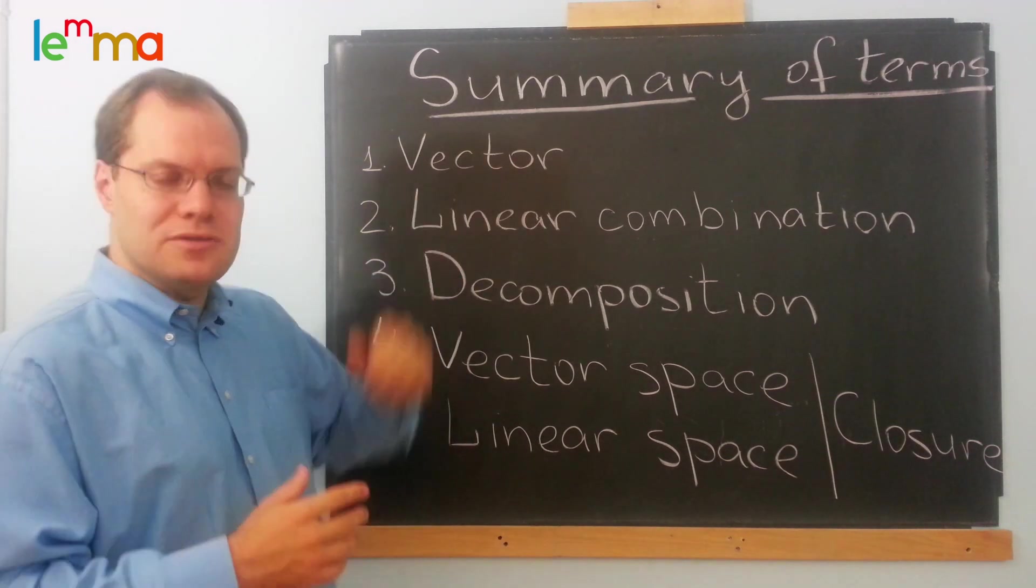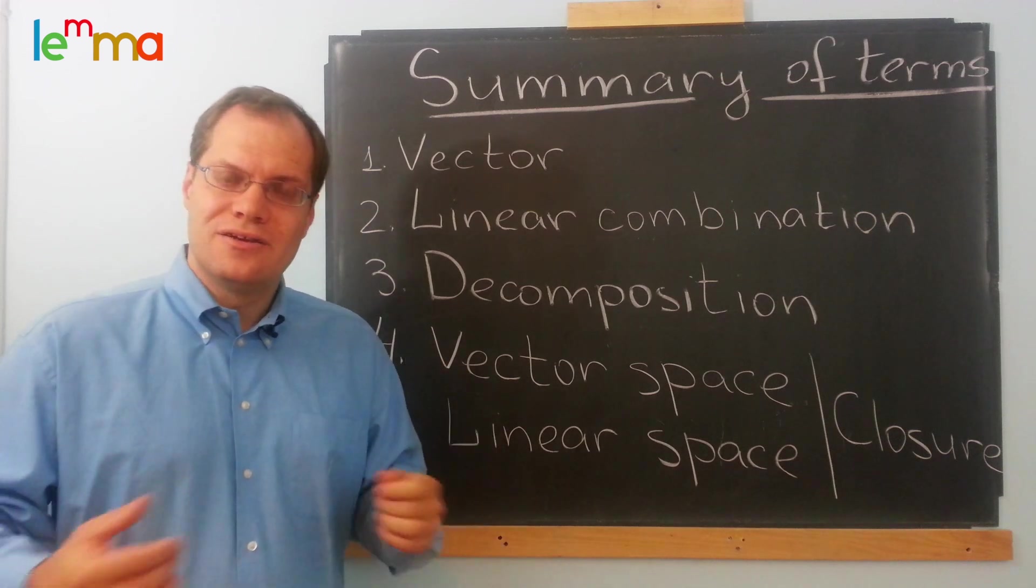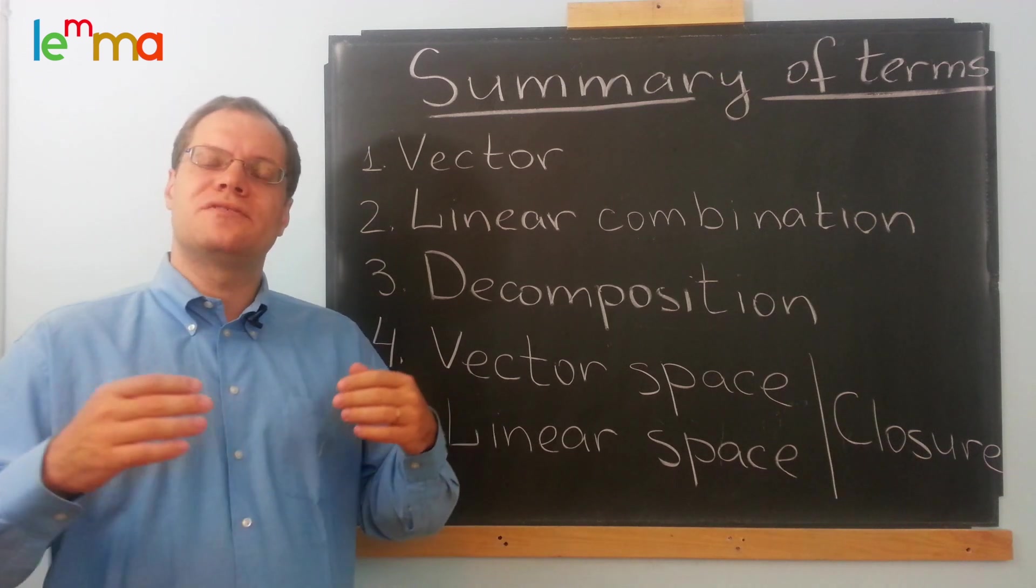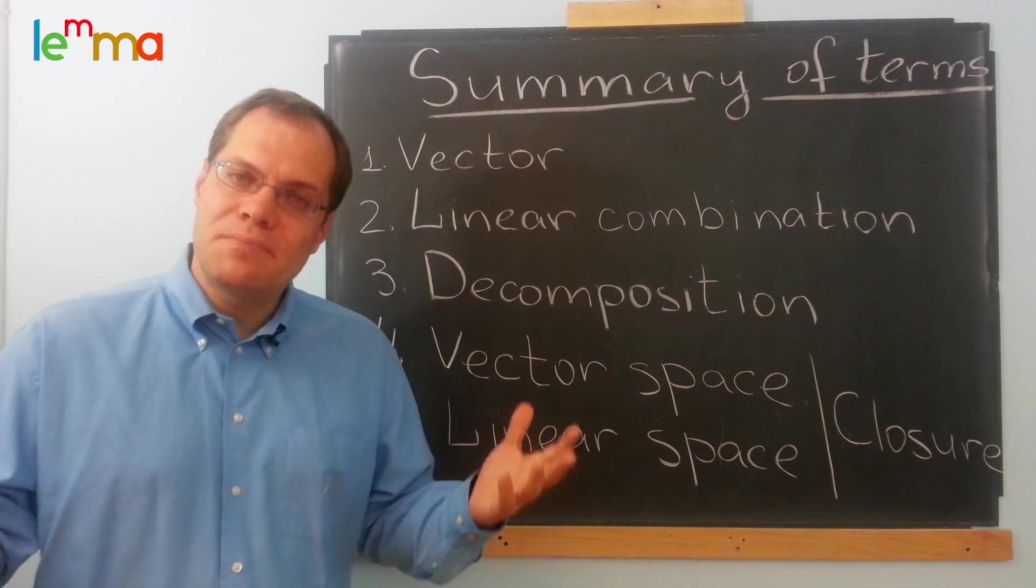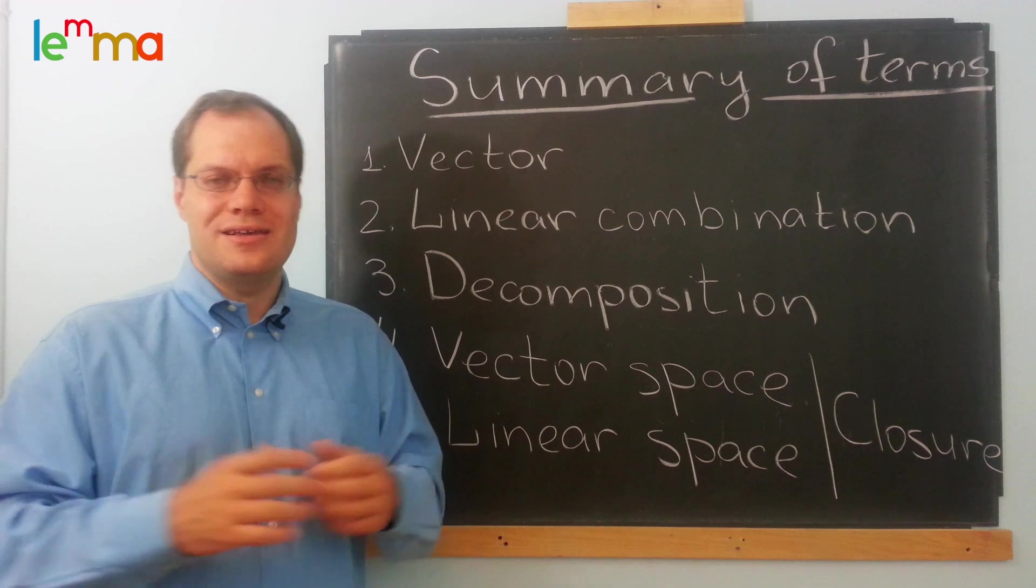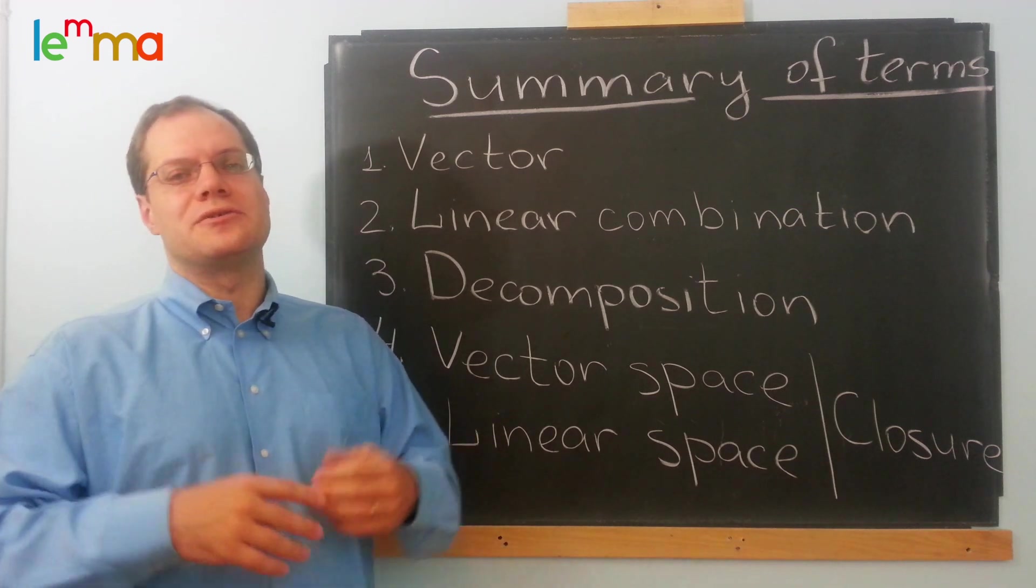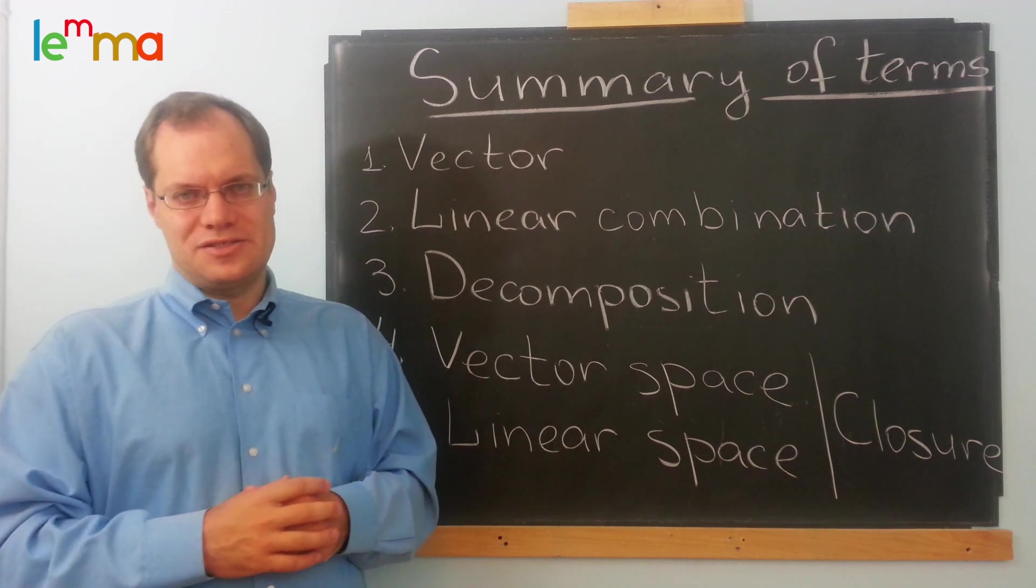So for example, polynomials form a vector space. And geometric vectors in the plane form a vector space. And geometric vectors in the space, in the three-dimensional space, form a vector space. And R^3 is a vector space, or a linear space. And R^2, and more generally R^n, is a vector space.